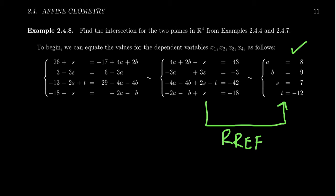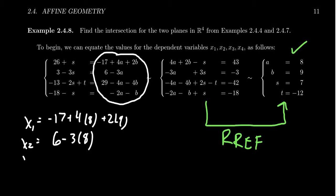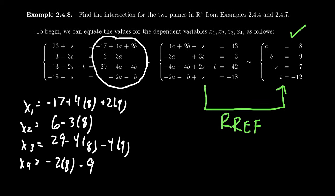If we want to actually know what the vector is, we have to go back to the original representations. Look at the AB representation for a moment. This one tells me that X1 equals negative 17 plus 4 times 8 plus 2 times 9. And X2 equals 6 minus 3 times 8. And X3 equals 29 minus 4 times 8 minus 4 times 9. And X4 equals negative 2 times 8 minus 9. You'll see that if I use the AB representation, I actually don't use ST at all. And when we compute these things, 4 times 8 is 32, 2 times 9 is 18, minus 17, we should end up with 33 when we're done.